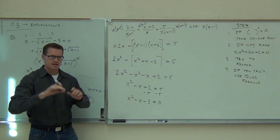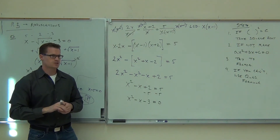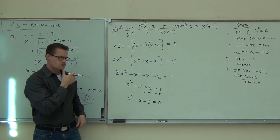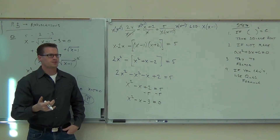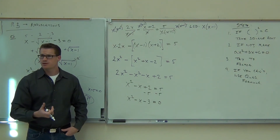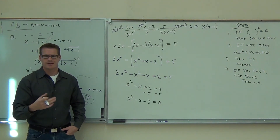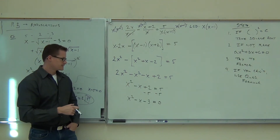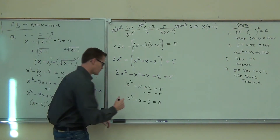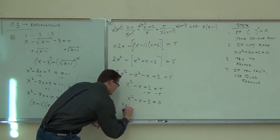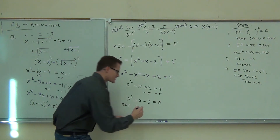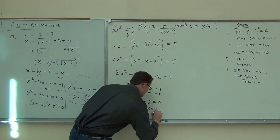I want you to spend 10 seconds trying to factor it — it's a good habit to get into. Trying to add to negative 1 and multiply to negative 3. Can you think of anything? No, I can't either. Because the 2 and the 1 — that's going to multiply to 2, that doesn't really work. So if we cannot factor, what are you going to do? Quadratic formula. So A is 1, B is negative 1, C is negative 3.